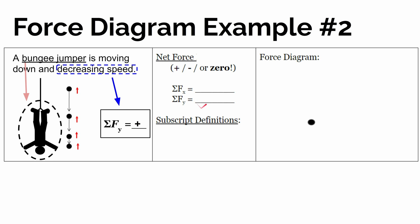So let's transfer this to our diagram. The sum of the forces in the y direction must be positive. And we're assuming they're moving straight down — there's no horizontal motion. So horizontally, the bungee jumper is essentially at rest, even though they're moving vertically. In the horizontal direction, the sum of the forces in the x direction must be zero.